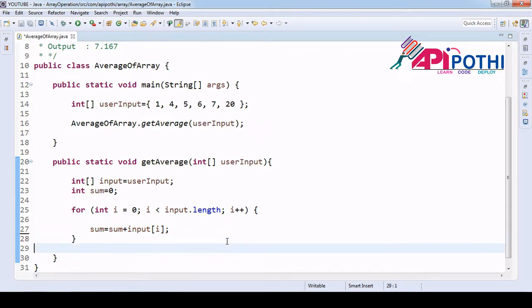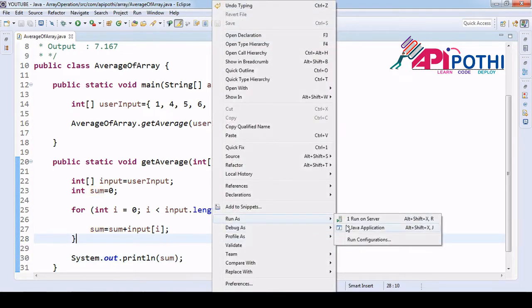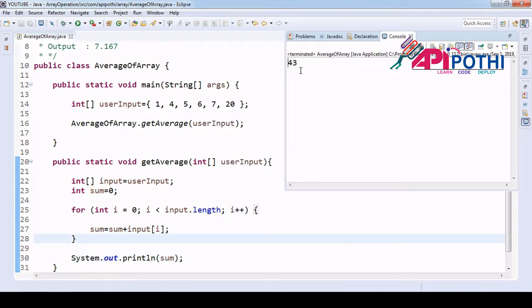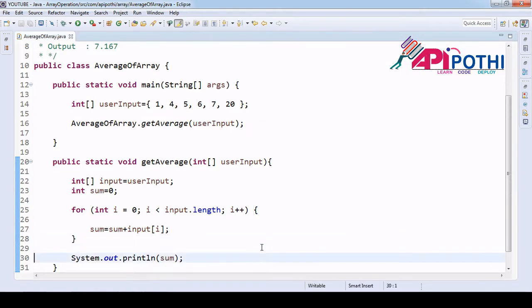I don't need this sysout since we got to know the value is coming. For debug purposes we kept that sysout. Now we are just verifying whether we are getting correct sum or not. Let's run this program. We are getting sum as 43, that is perfectly fine.